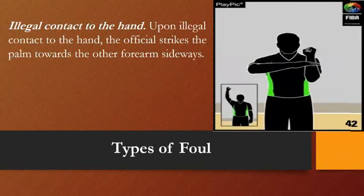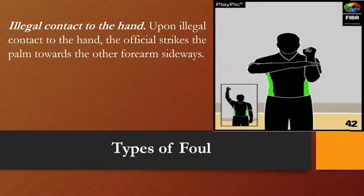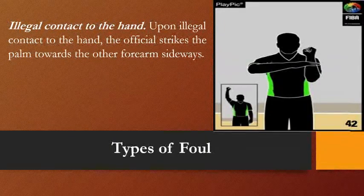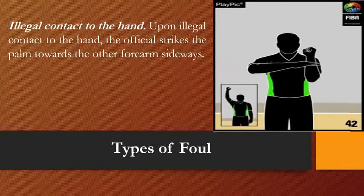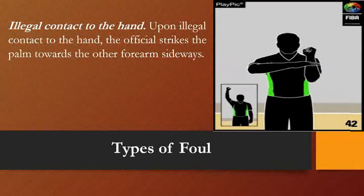Illegal contact to the hand: upon illegal contact to the hand, the official strikes the palm toward the forearm sideways, meaning contact was made on the arms of the player.